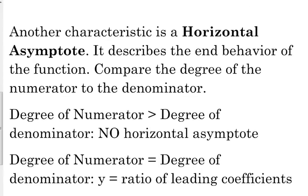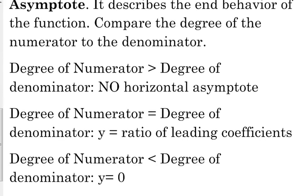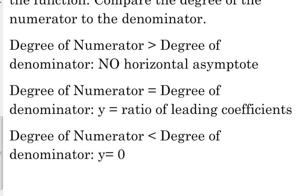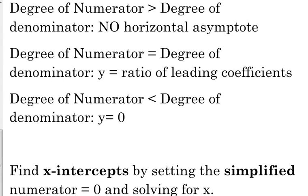We've got three scenarios. We compare the degree of the numerator to the degree of the denominator. If the numerator's degree is bigger than the denominator's, we do not have a horizontal asymptote. If they're equal, then the horizontal asymptote is y equals the ratio of the leading coefficients. If the numerator's degree is less than the denominator's, then it's y equals 0. To find x-intercepts, we set the simplified numerator equal to 0 and solve.